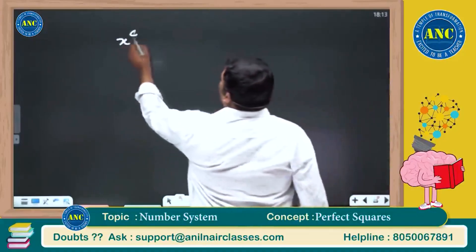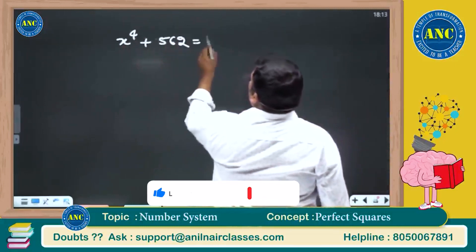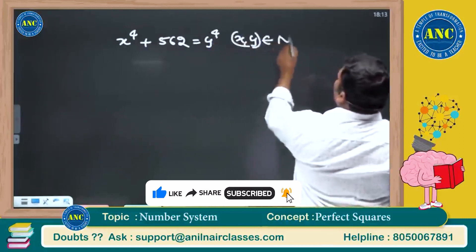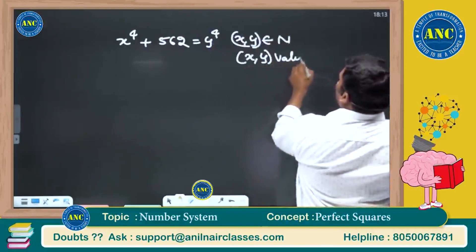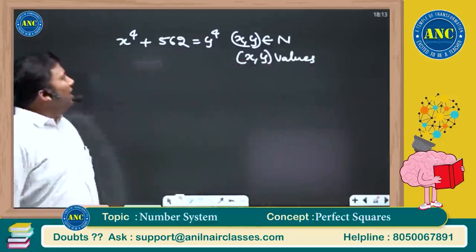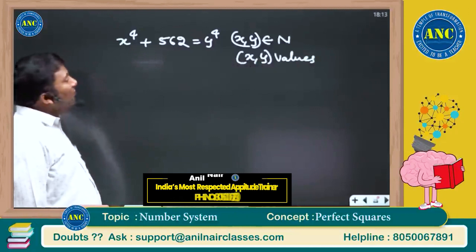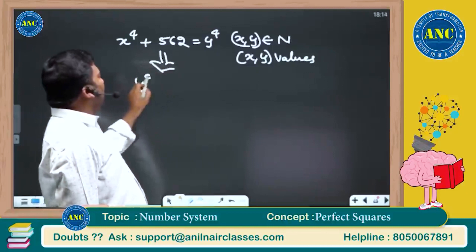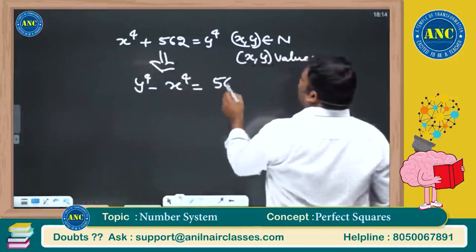Now let us solve this question: x squared plus 562 equals y to the power 4, where x and y are natural numbers. How many values will x and y take which satisfy this equation? This is equivalent to y power 4 minus x power 4 equals 562.